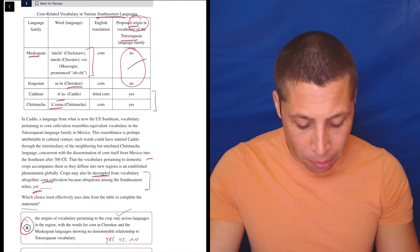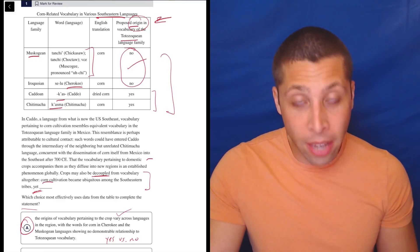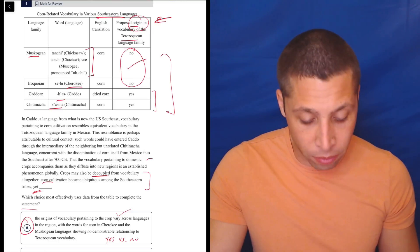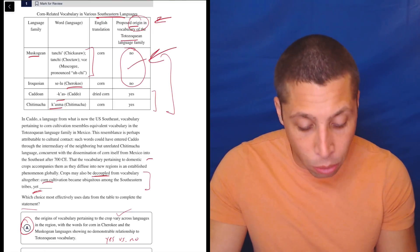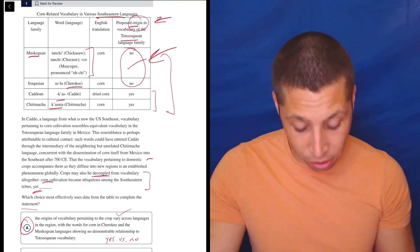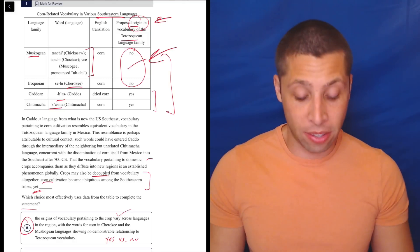The origins of vocabulary pertaining to the crop. Well, they're talking about the origins right here. Vary across languages. Some of these are yes. Some of these are no. With the words for corn in Cherokee and the Muscogean languages showing no demonstrable relationship to the Tadizokian vocabulary. That's literally what the no's are saying. So it's talking about the chart. It's talking about the paragraph. It's just a lot of the same ideas blending together. That's all that there is here.